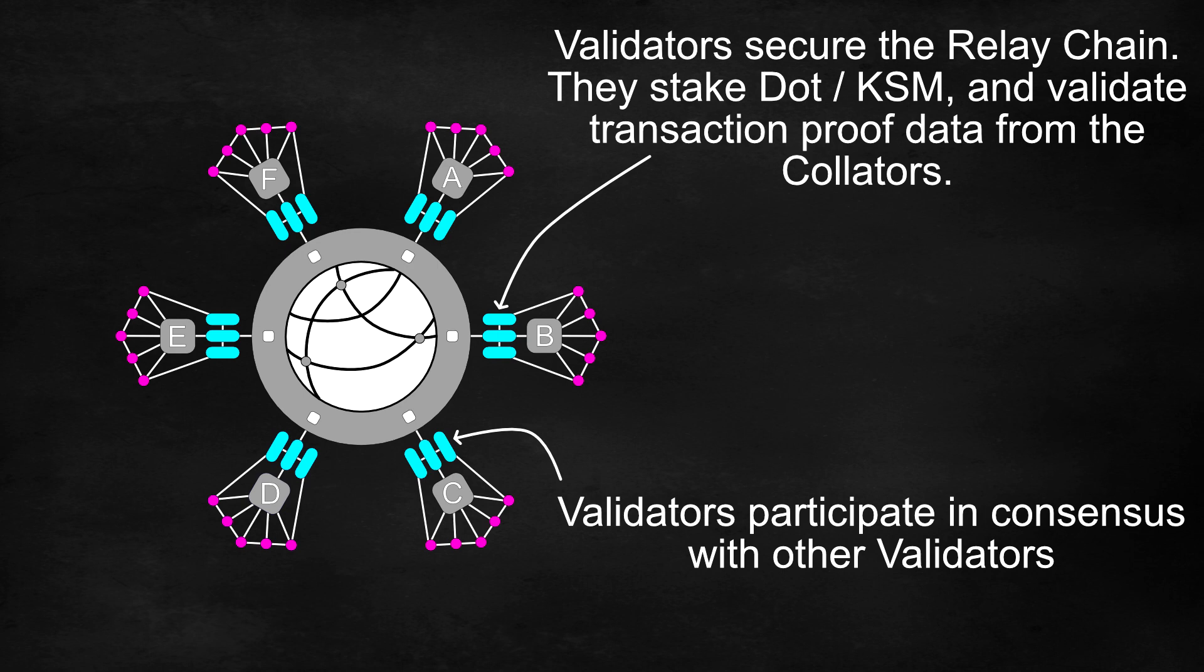The validators play a crucial role in validating and adding blocks, groups of transactions, to the relay chain and therefore extending to all parachains. This allows cross parachain transactions via the relay chain.